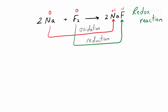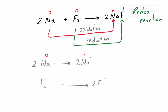Since the oxidation number of sodium increased, it is undergoing oxidation, while the oxidation number of fluorine decreased, so it is undergoing reduction. To split this into two half-reactions: two sodium atoms change to two sodium ions, and fluorine changes to two fluoride ions. To balance the charge, we add two electrons to the right side of the sodium half-reaction, and two electrons to the left side of the fluorine half-reaction, balancing both.